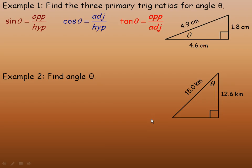Flipping over to the second page, and the first couple of examples, in the first one we're asked to find the three primary trig ratios for angle theta. And here's angle theta in the triangle, and so we should label the three sides, the adjacent, opposite, and hypotenuse.